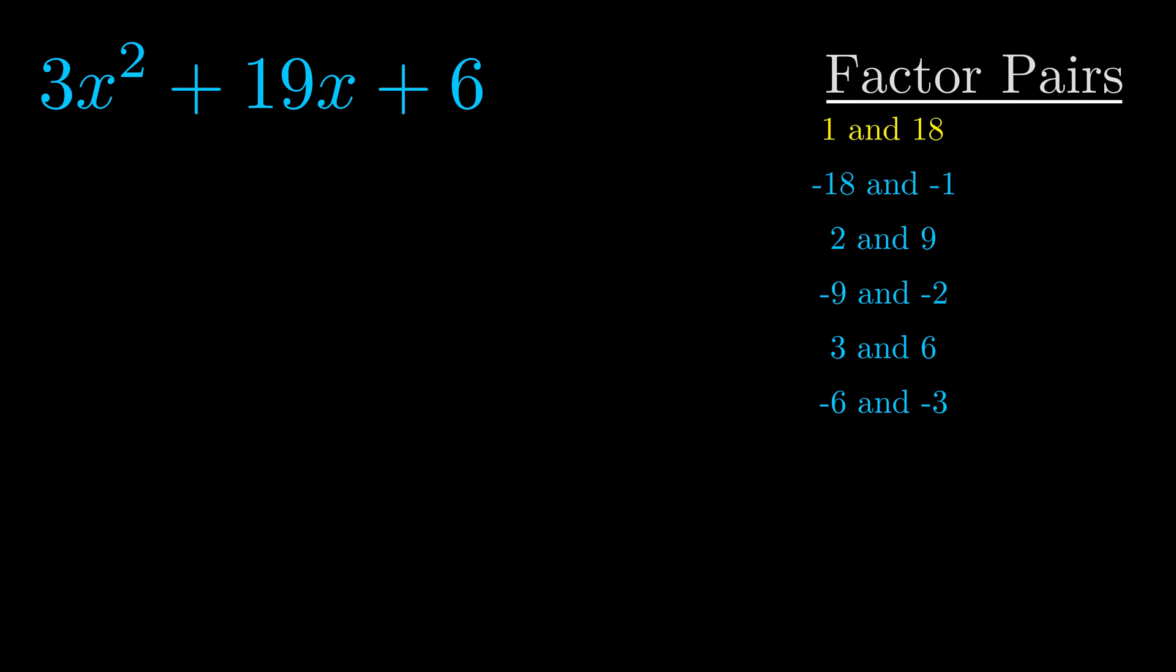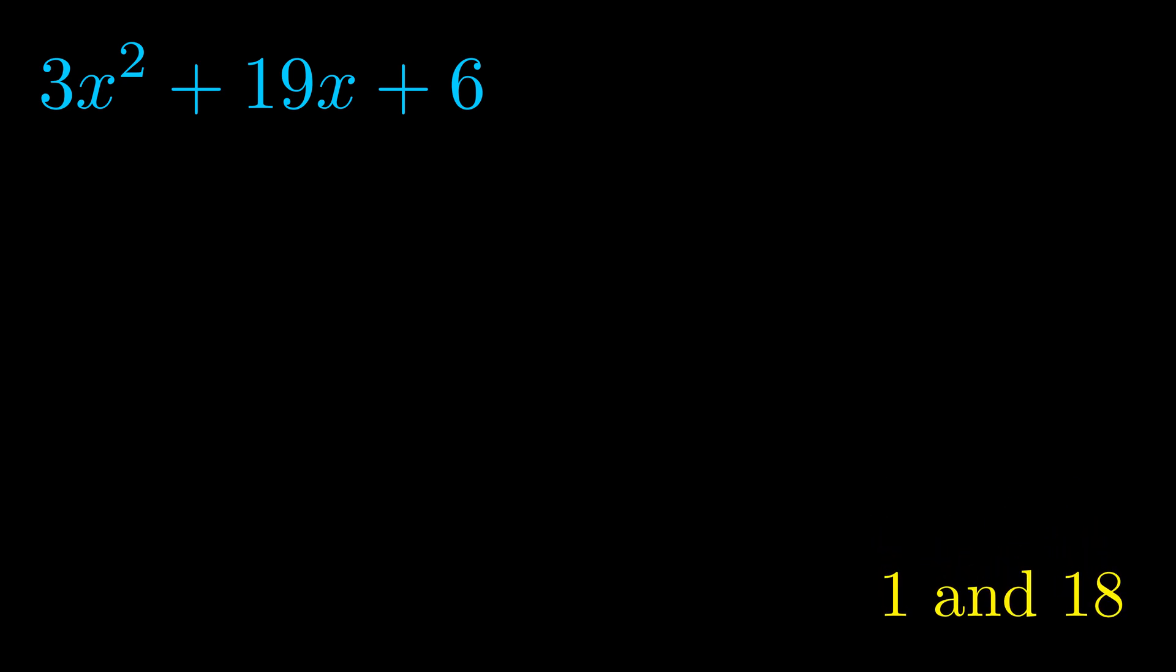And really this is the only factor pair that we need. Now once we have this factor pair, what we want to do is use it to split up the b value.